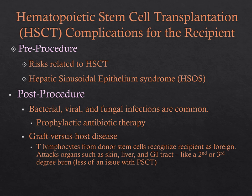HSCT complications include acute toxicity similar to radiation or chemo — nausea, diarrhea, mucositis, fever, chills, chest pain, and signs of infection. Until engraftment of the new stem cells occurs, these clients are at high risk of death from sepsis and bleeding. Post-procedure they remain at risk of bacterial, viral, and fungal infection, so prophylactic antibiotic therapy may be given. We also need to watch for graft versus host disease, where the body may reject the stem cell transplant.